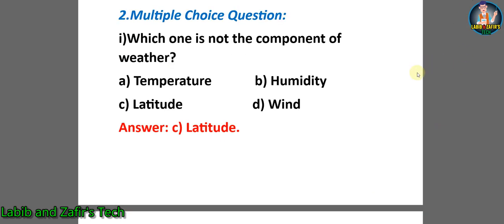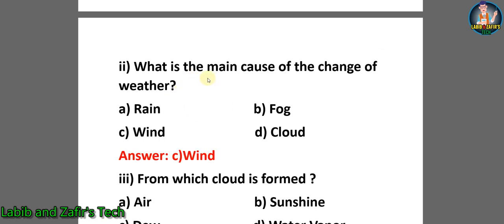Now let's go through some multiple choice questions. Number one: which one is not a component of weather? A) temperature, B) humidity, C) latitude, D) wind. The correct answer is C) latitude. Number two: what is the main cause of the change of weather? A) rain, B) fog, C) wind, D) cloud. The correct answer is C) wind.